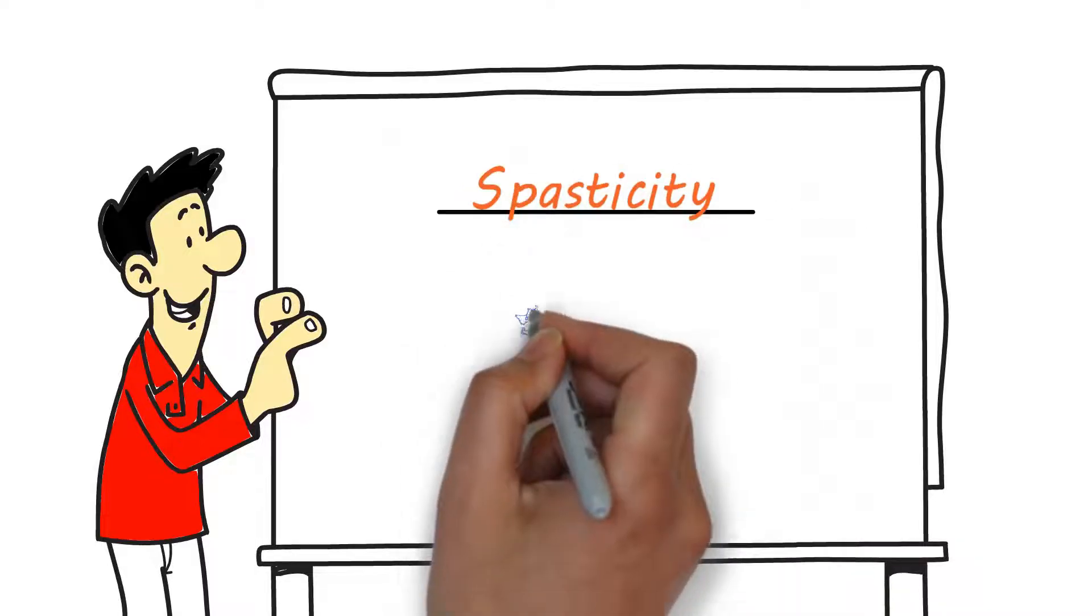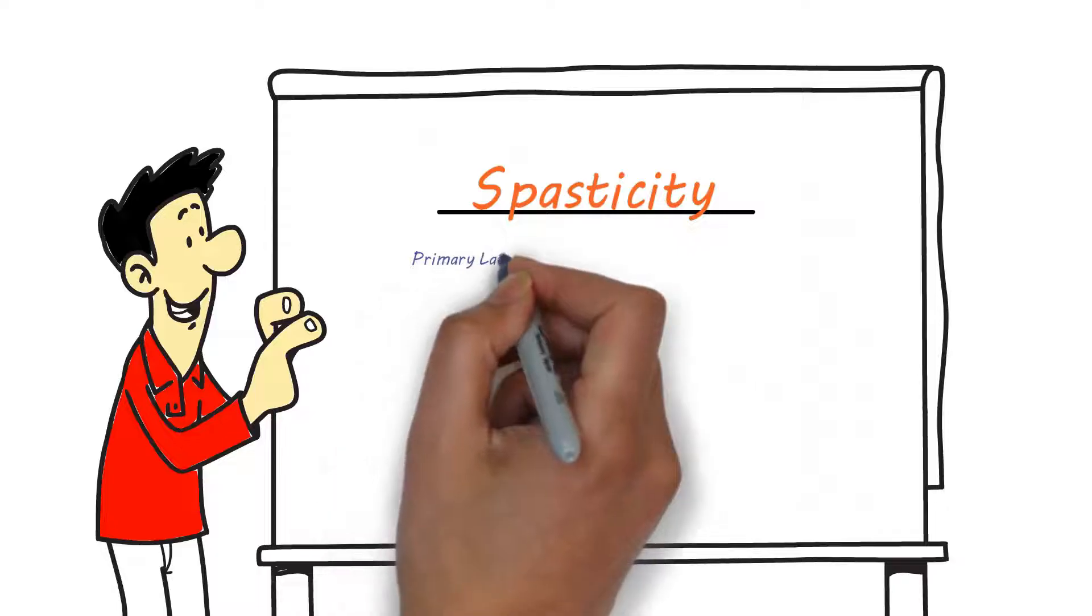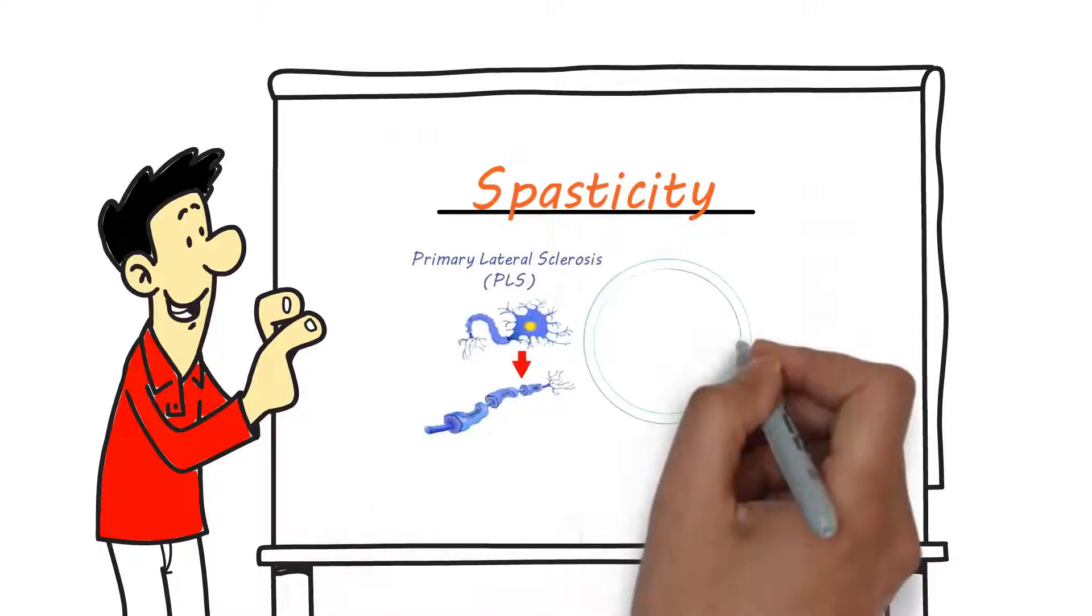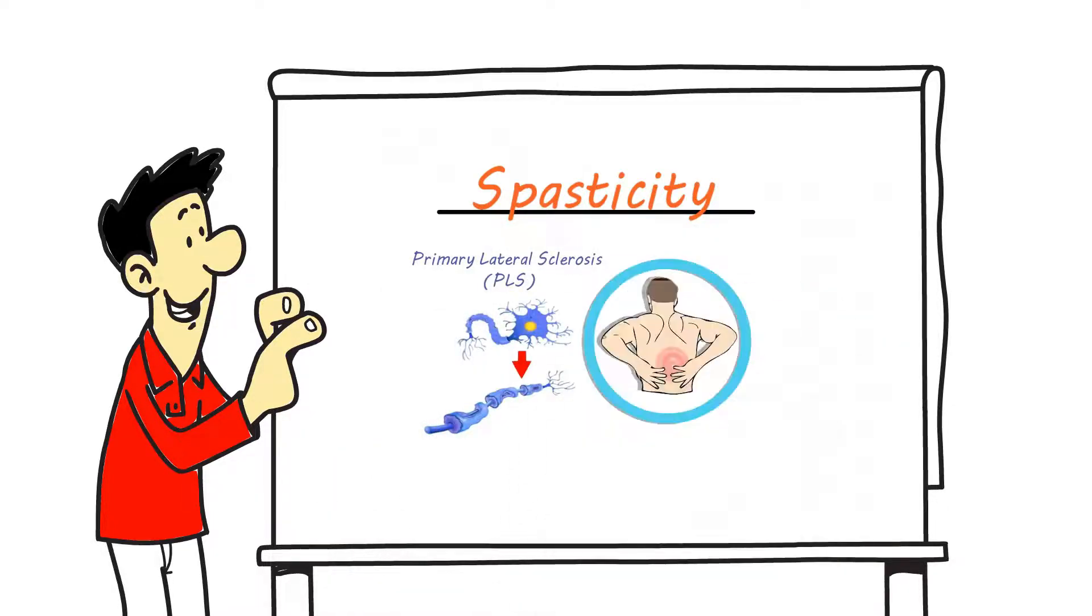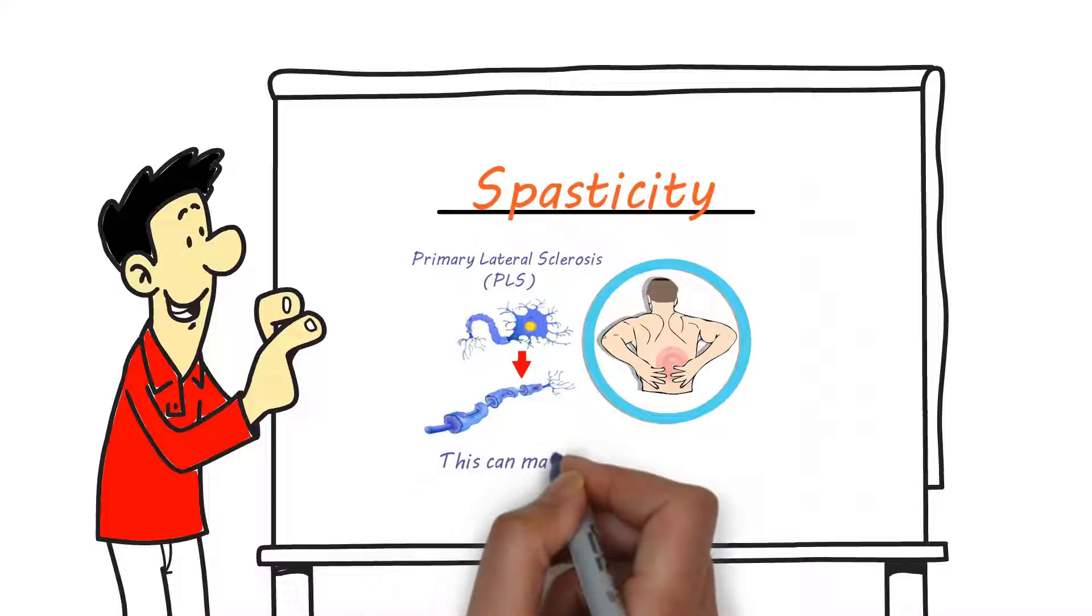Spasticity. In some forms of motor neuron disease, such as primary lateral sclerosis, PLS, spasticity, or stiffness in the muscles may occur. This can make it difficult to move and can also cause pain or discomfort.